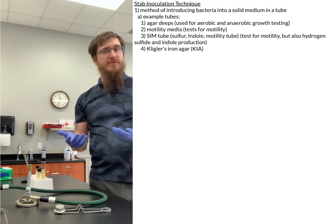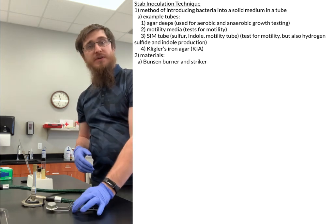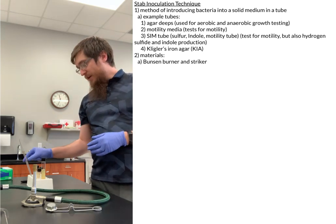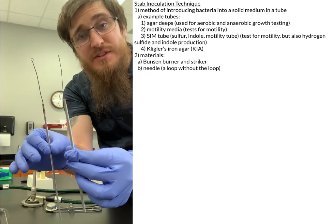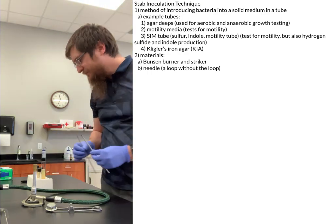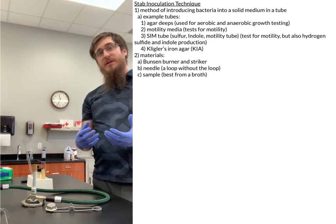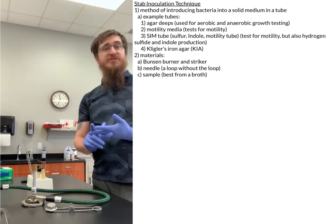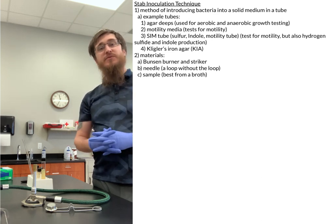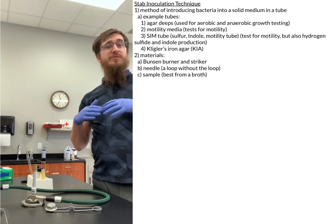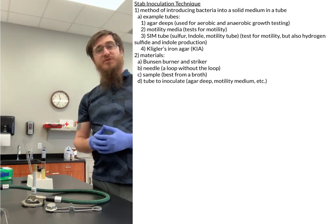With the intro out of the way, let's talk about the different materials you're going to need to perform this procedure. You're going to need your Bunsen burner and the striker in order to sterilize your needle. The needle is basically just like a normal loop, except the loop at the top has been taken off — that's all it is. You're going to need your sample, and whenever I do stabs I tend to prefer to use a broth sample. You can use slants and plates as well. And then you're going to need something to inoculate — whether that's a motility tube, a SIM, or a KIA slant — it just depends on the specific type of procedure you're doing.